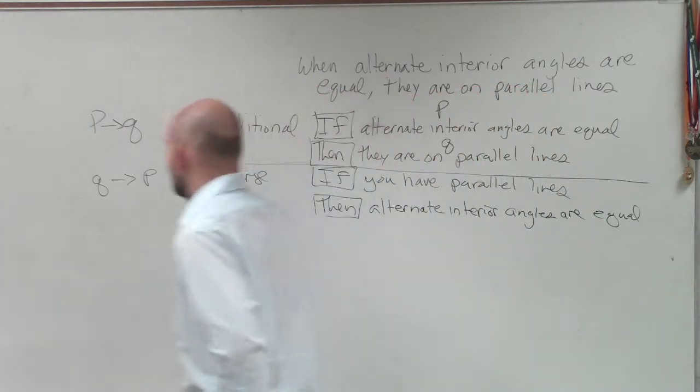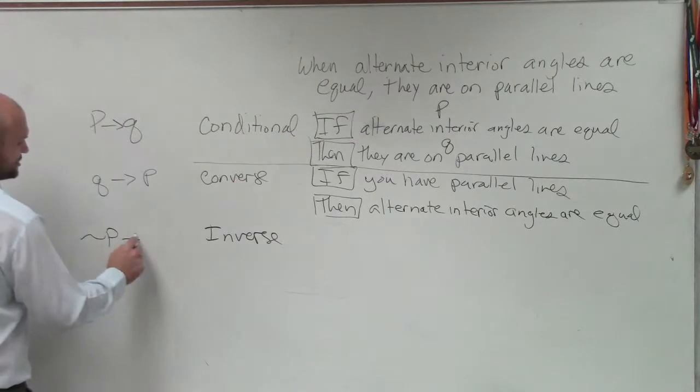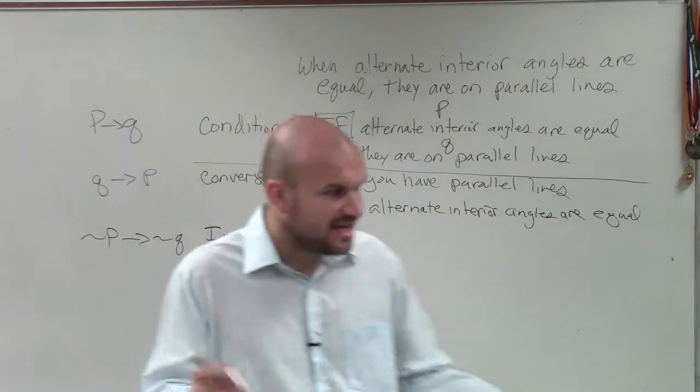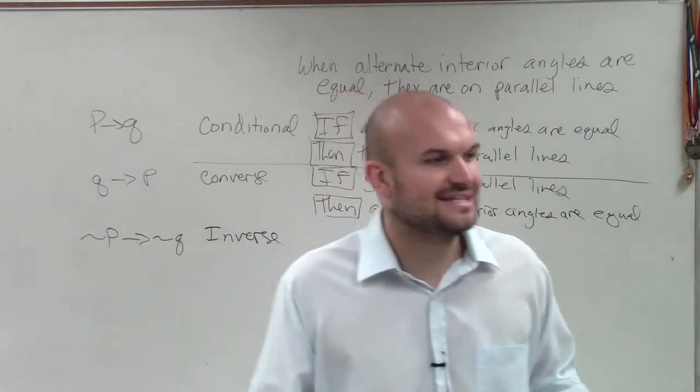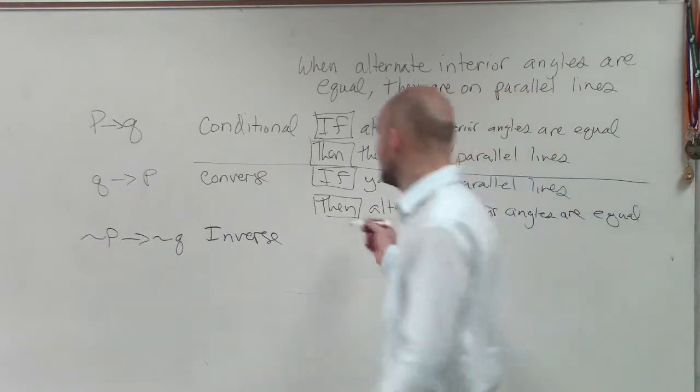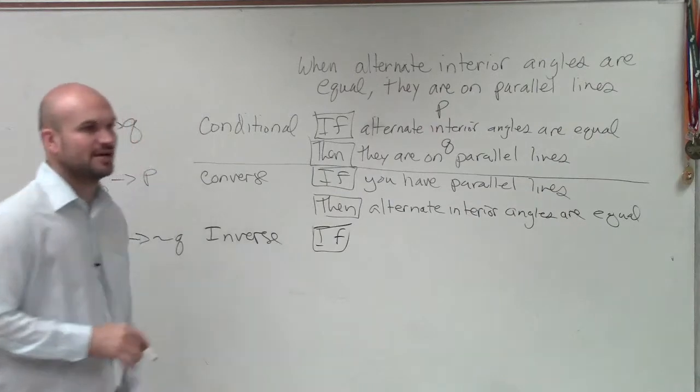So inverse, ladies and gentlemen, the way that inverse goes is the negation of P and the negation of Q. So it's still if P, then Q, but now it's the negation. And remember, the negation is going to be like the opposite. So the way that we write negation is we're just going to write the opposite of alternate interior angles are equal.